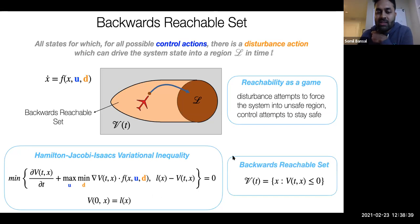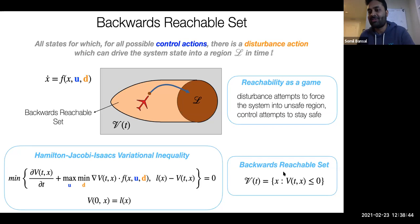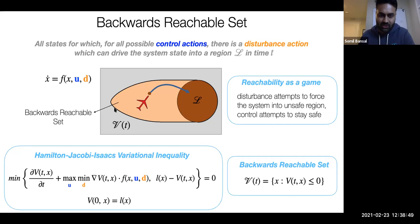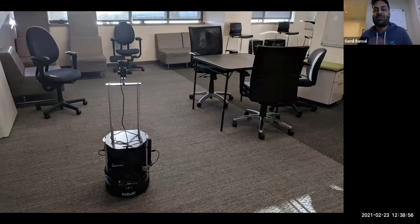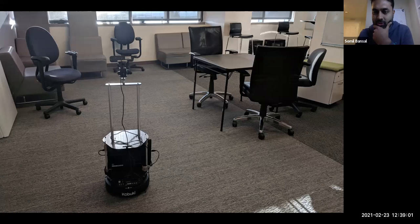The variational inequality has a PDE term, and we ensure that trajectories are not escaping the target region after entering it. Once we compute this value function, the backward reachable tube is given by the sub-zero level set of that value function — the region within the black boundary.